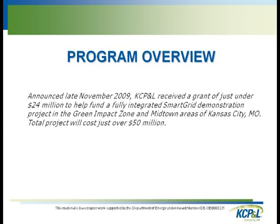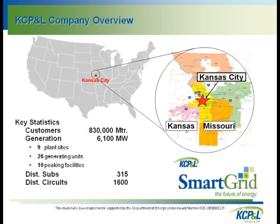Kansas City Power & Light is located in the Midwest — a small utility. What we're doing in the Smart Grid area is a DOE demonstration grant, which is providing half the funding for a small pilot project located in Kansas City, Missouri. KCP&L is an investor-owned utility covering two states, Kansas and Missouri, with most customers in Missouri. We have a large concentrated urban group of customers and industrial customers, as well as rural customers. We have our own generation, transmission, distribution.